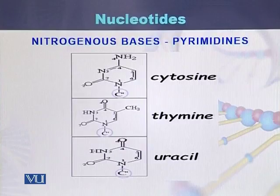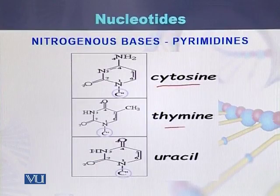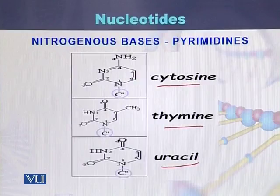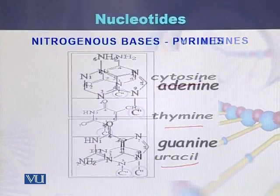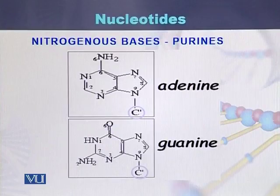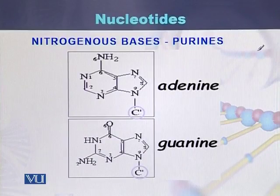In a nucleotide, there are five different types of nitrogenous bases: cytosine, thymine, and uracil are single-ring nitrogenous bases and collectively they are called pyrimidines. On the other hand, there are two additional types of nitrogenous bases called purines.